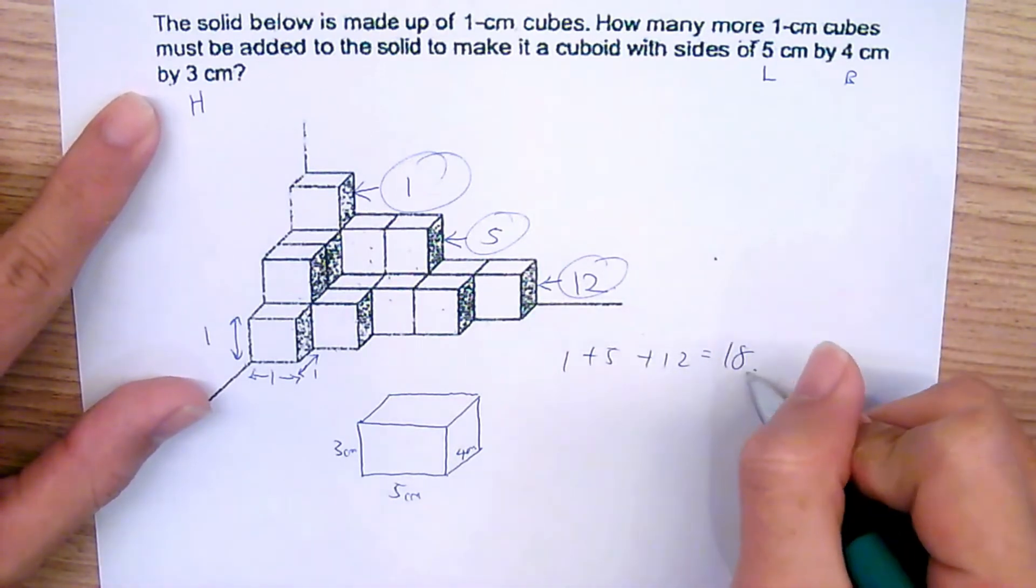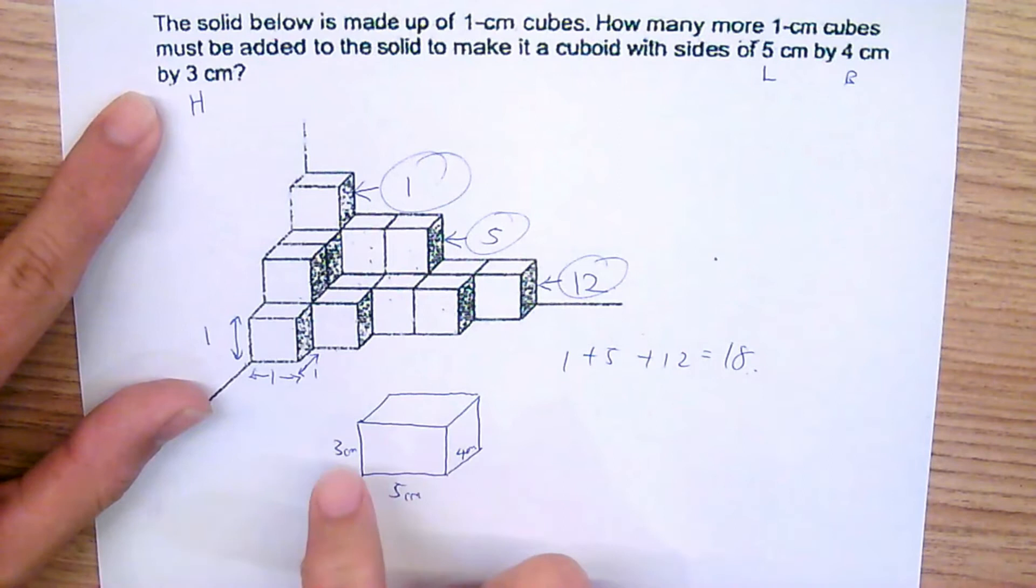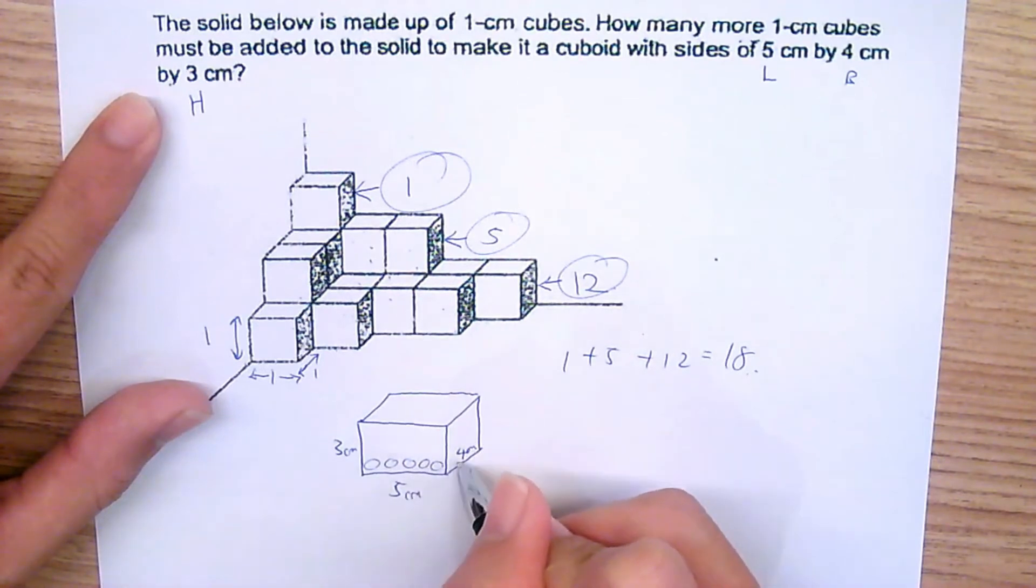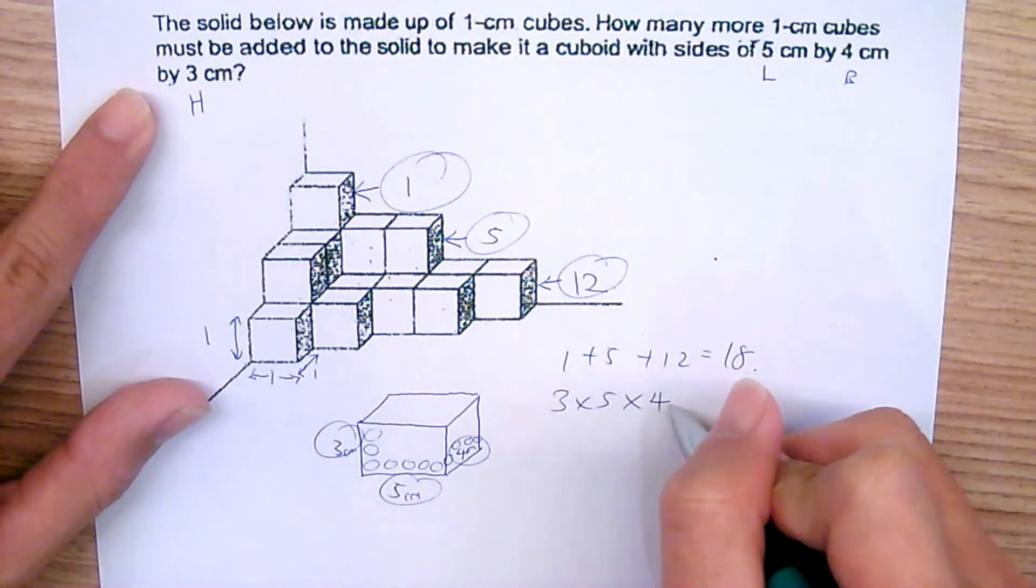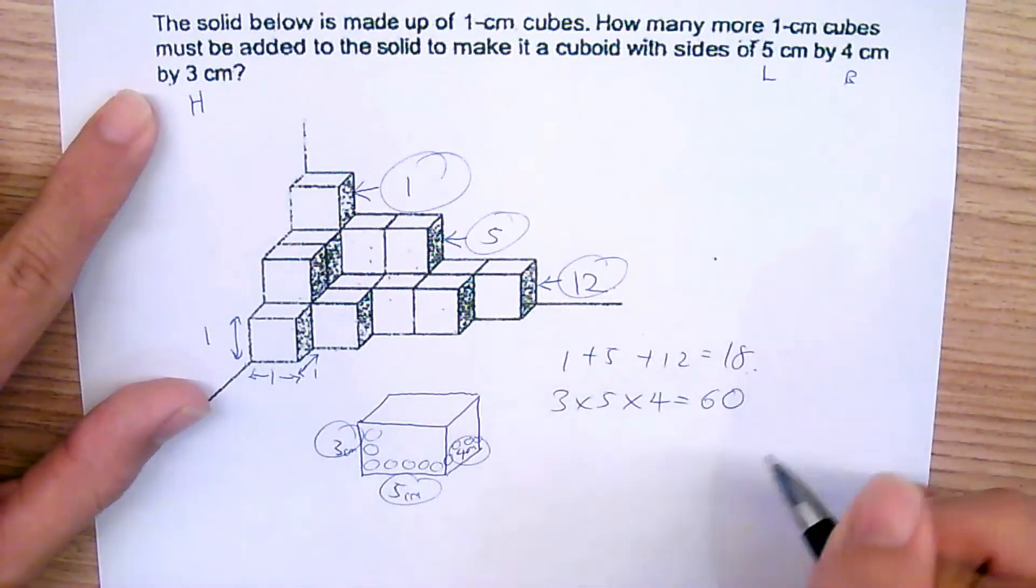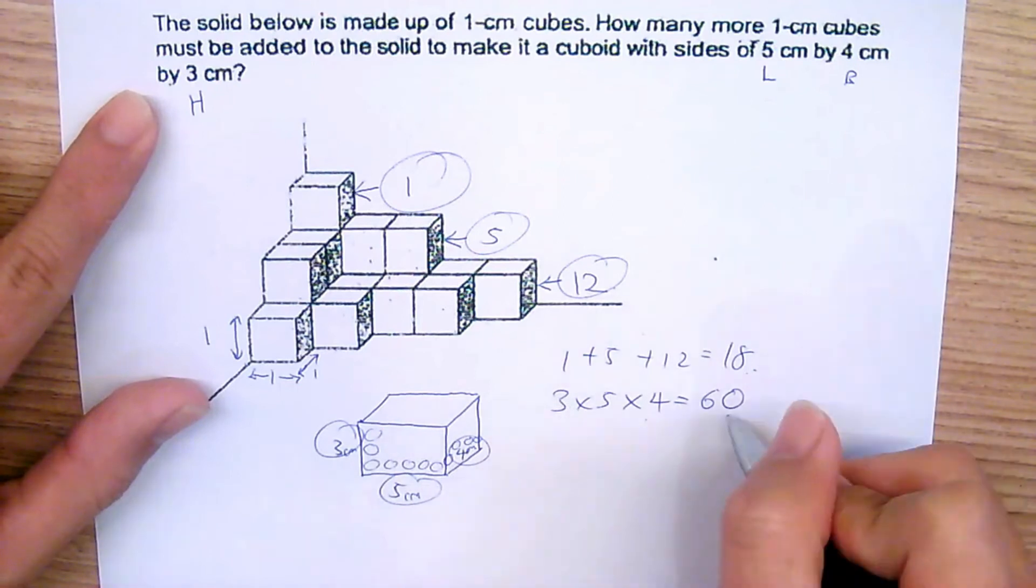To figure out how many 1cm cubes we can put inside here: if it's a length of 5cm we can put 5 cubes inside, breadth of 4 we can put 4 cubes inside, and height of 3 we can put 3 cubes inside. So total we have to multiply 3 by 5 by 4. Three multiply by 5 multiply by 4, that will give us 60.